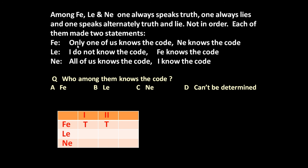Assume Phi's statements are both true. First statement: 'Only one of us knows the code' — assume it is true. Second statement: 'Ni knows the code' — this means Ni knows the code, so we put a Y mark. Now let us verify this information from Li's statements.